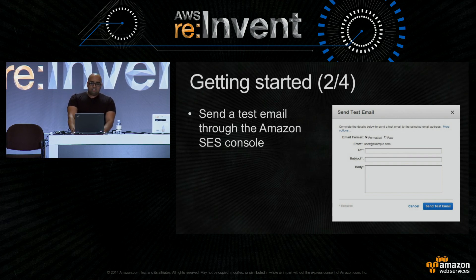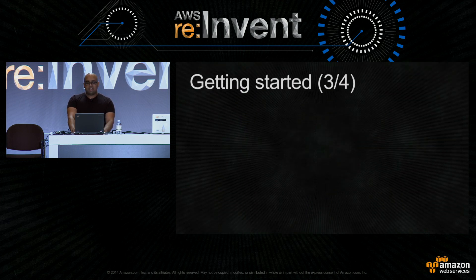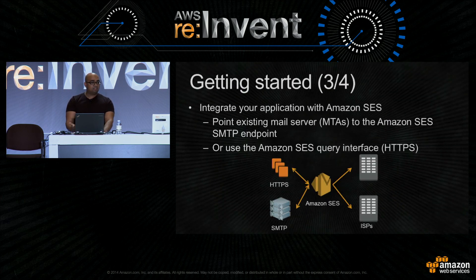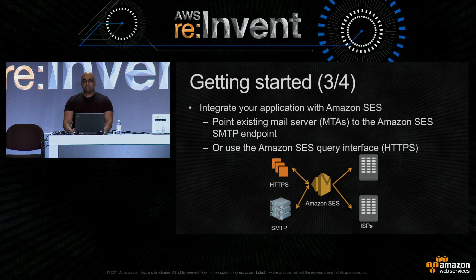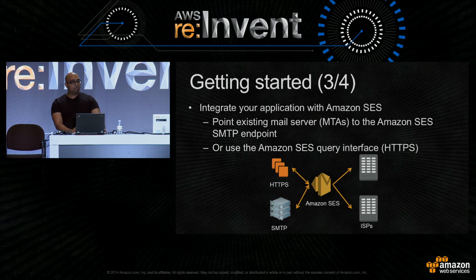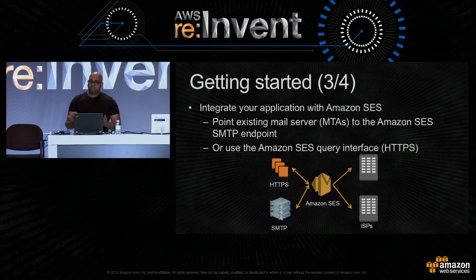The next step is to connect your application with SES and actually give us those email requests that you want to send through us. There are two major ways to do this. The first and probably fastest way would be to point your existing infrastructure — that is, the MTAs you use to deliver mail — to the SMTP endpoint of SES. The other way is to use the query interface that SES offers, that is our HTTP API. No matter which way you use, HTTP or SMTP, you get the same features and are interacting with the same service.